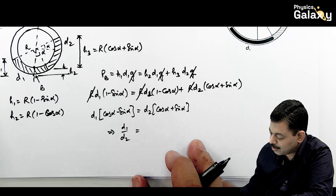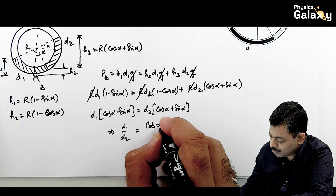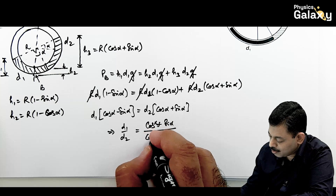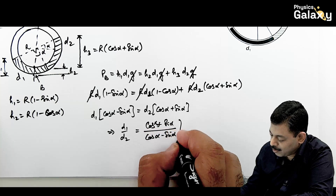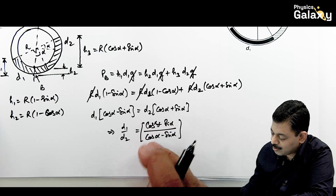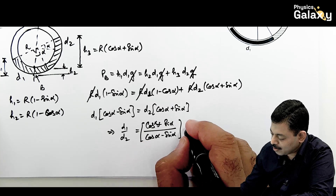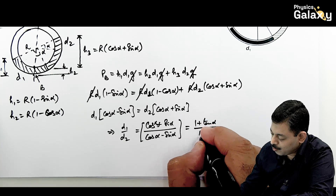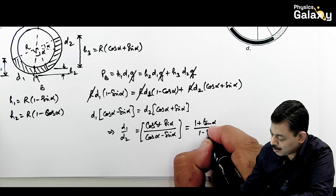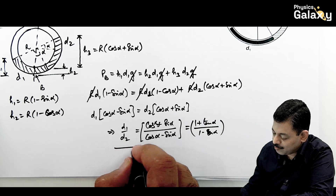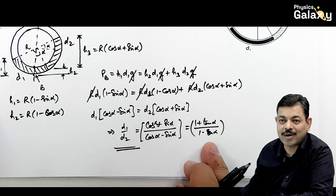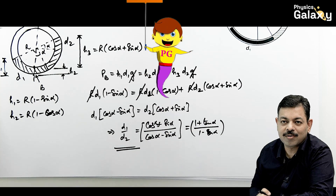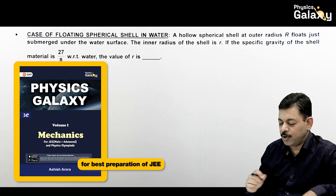Dividing numerator and denominator by cos α, this can also be written as (1 + tan α)/(1 - tan α). This is the relation between d1 and d2. You can leave the answer in either form.